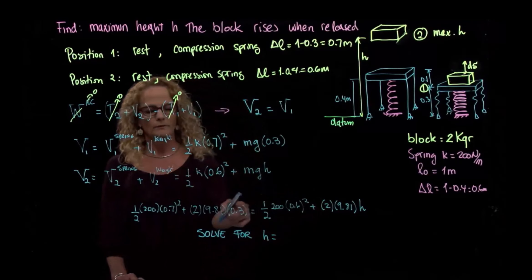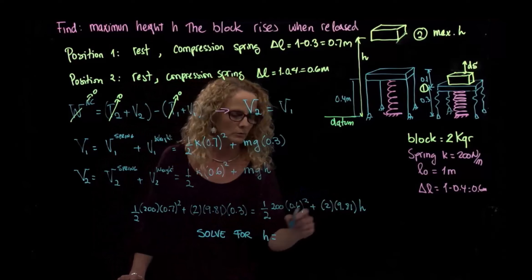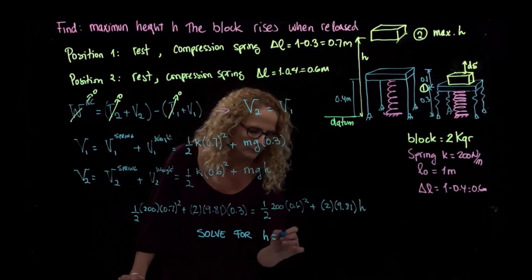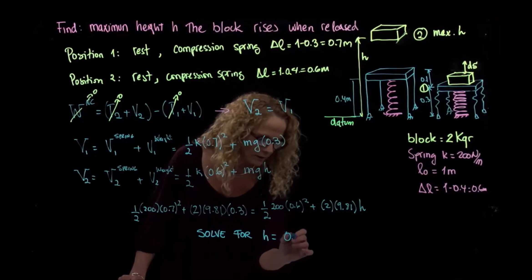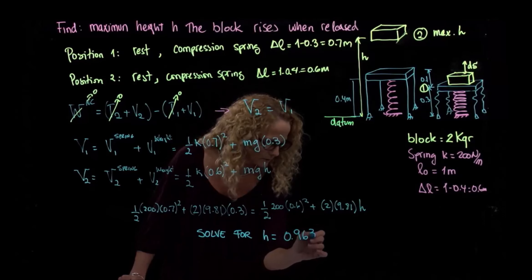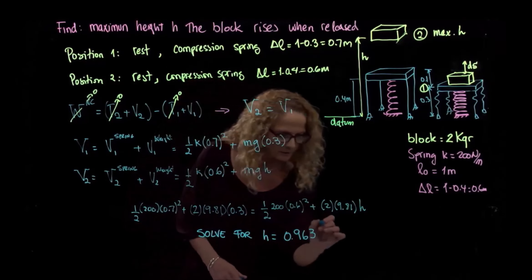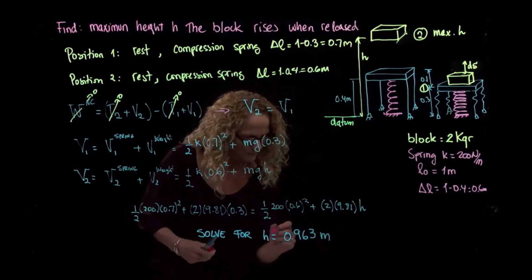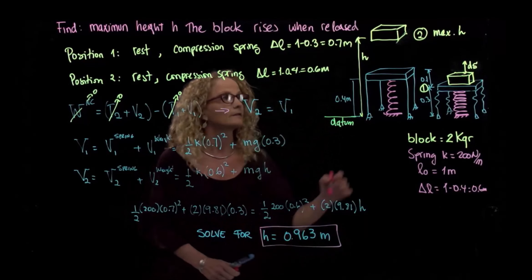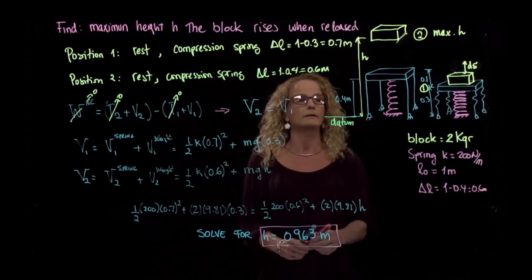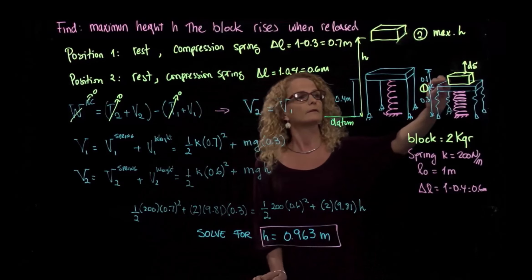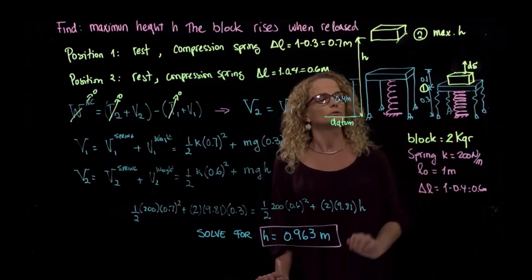Well, you have to just put that on the other side of the equation and divide by 2 and 9.81. I am going to put the result: it's 0.963, and the units will be meters. So this is the total height that the block is able to reach once it's released from position one.